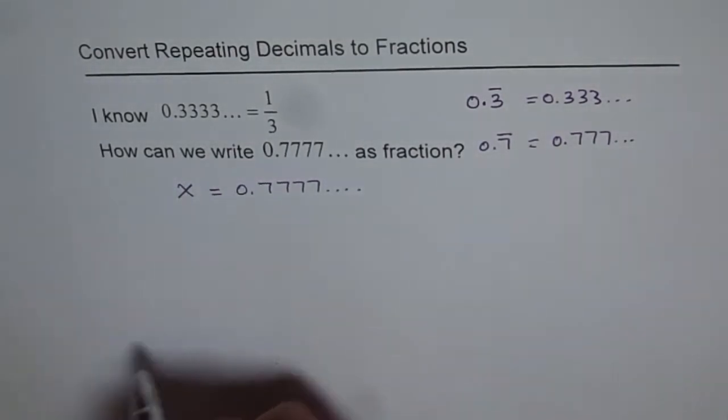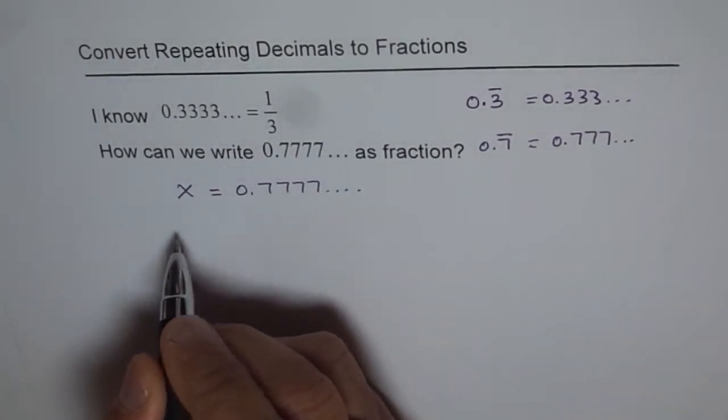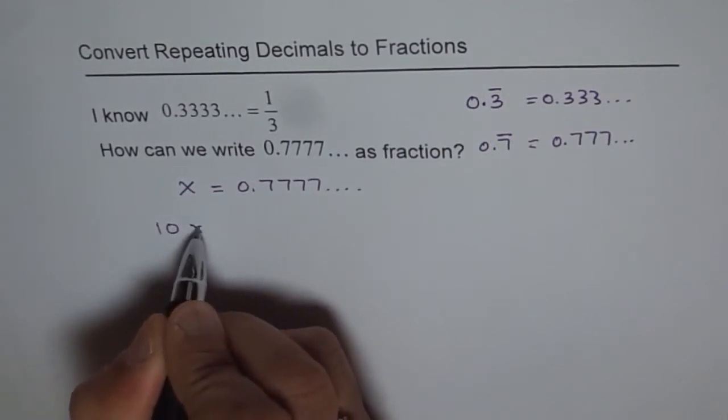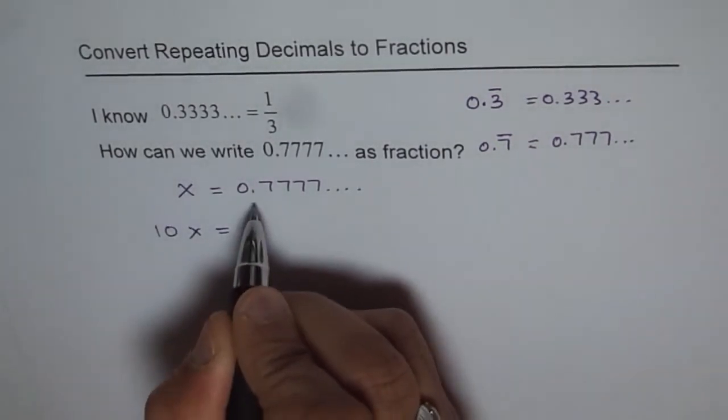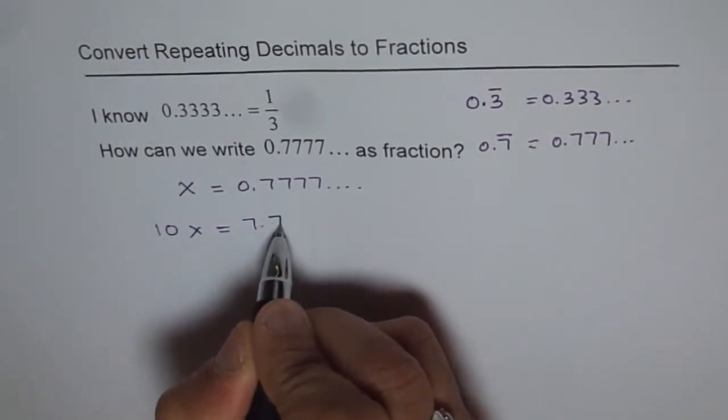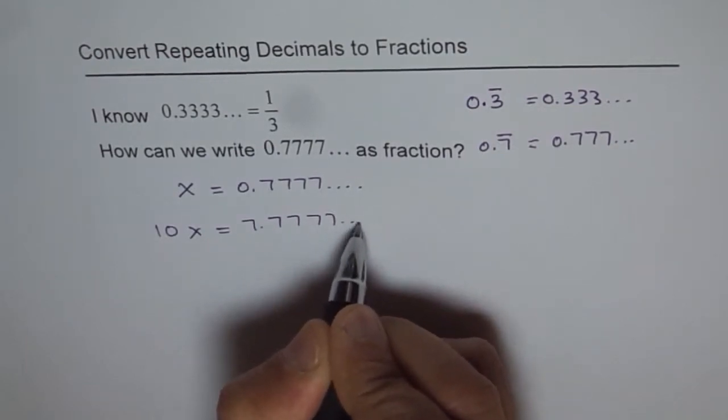In that case, what will be 10 times x? So now 10 times x is going to be 7.77777 and so on, correct?